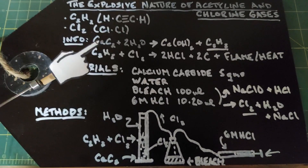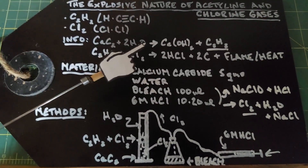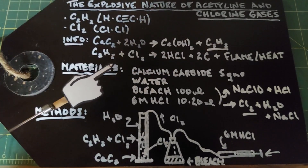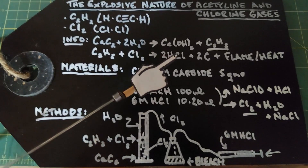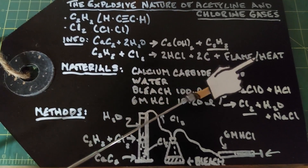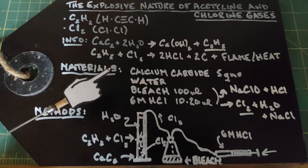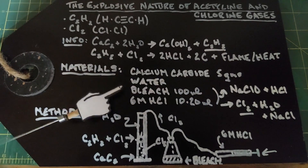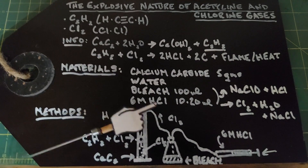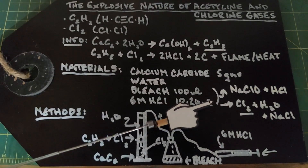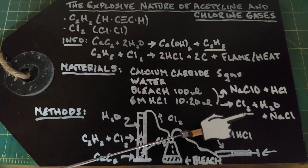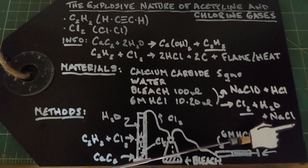The chemical equations for what we'll be doing: taking calcium carbide and mixing it with water, we'll get calcium hydroxide and acetylene gas. We're going to take that acetylene gas and mix it with chlorine gas, which will yield two hydrochloric acid molecules, two carbons which build up as soot, and a lot of flame and heat. Our materials are: calcium carbide five grams, a lot of water, bleach 100 milliliters over-the-counter, and six molar hydrochloric acid 10 to 20 milliliters. We're going to get our chlorine gas by mixing the bleach with the hydrochloric acid, which will yield chlorine gas, water, and salt.